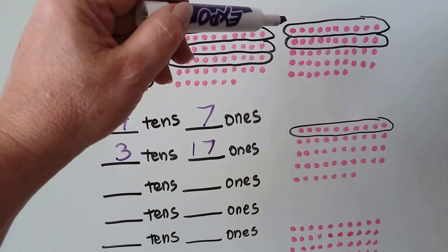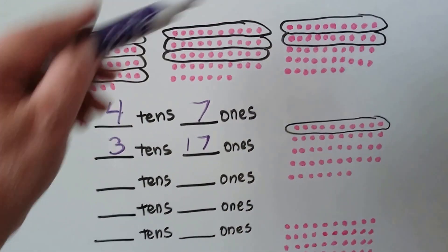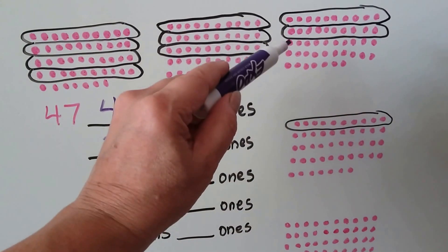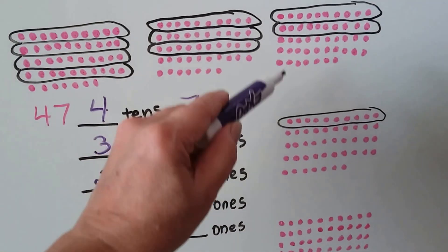It can also be regrouped as 2 tens and 27 ones.